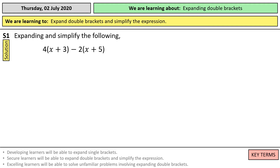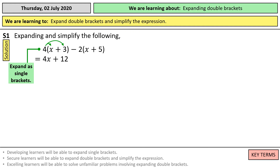The first question: 4 times x plus 2, minus 2 times x plus 5. So we need to multiply each term by the number outside. So first of all, we need to do 4 times x, which is 4x, 4 times 3, which is 12, and then we're doing negative 2 times x, which is negative 2x, and negative 2 times 5, which is negative 10.